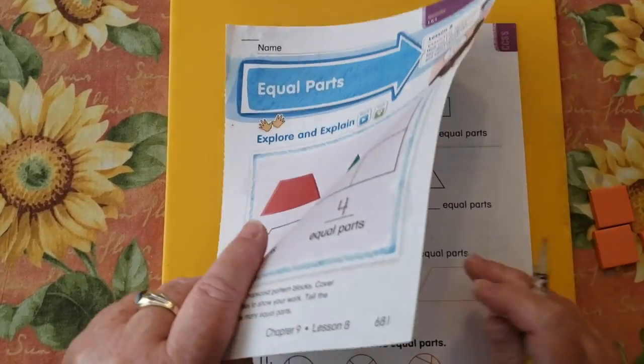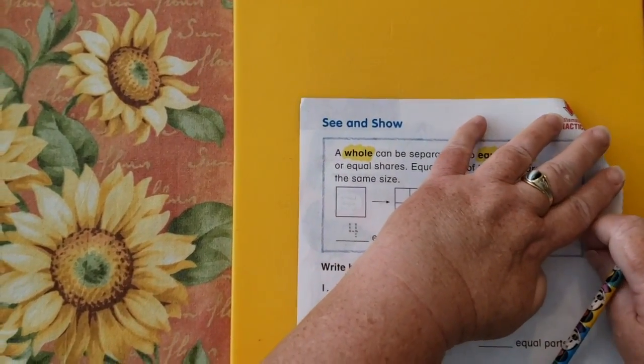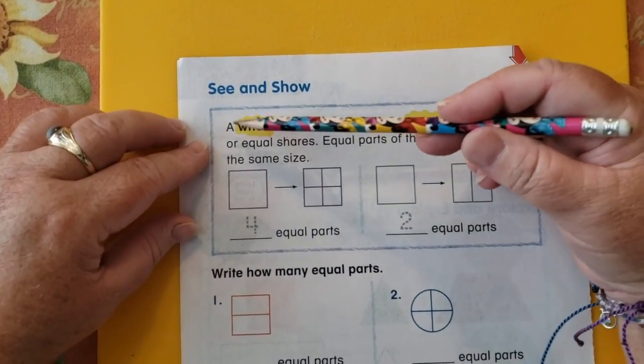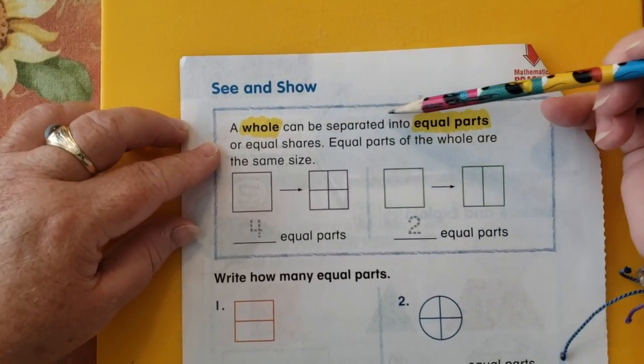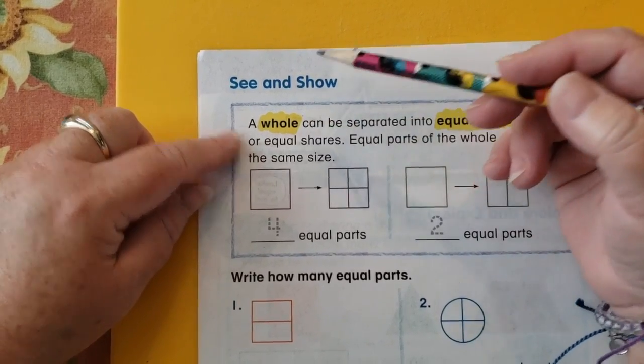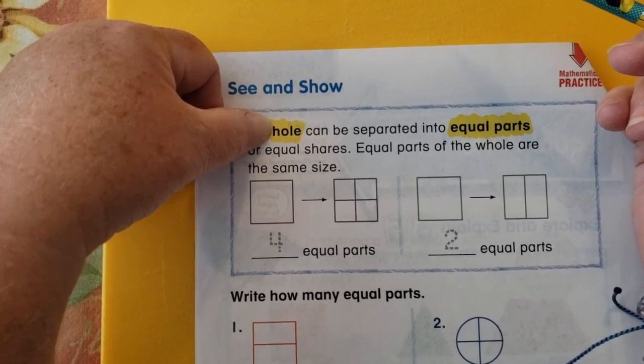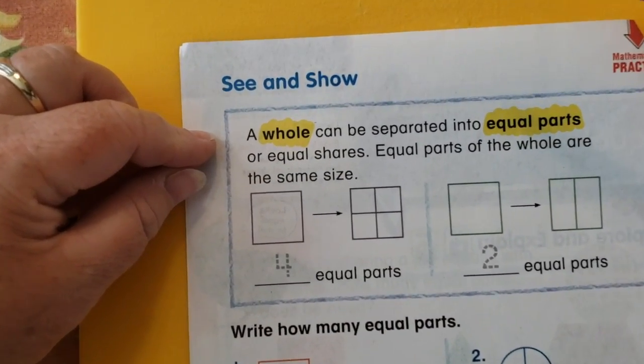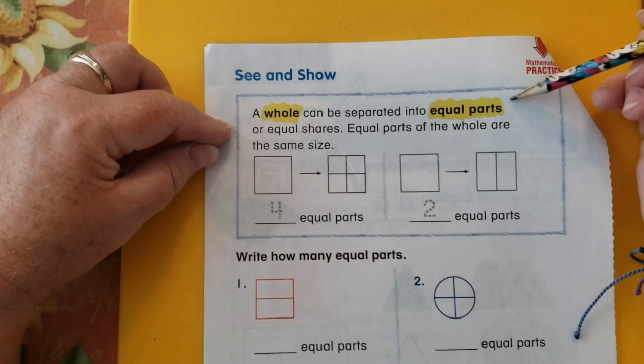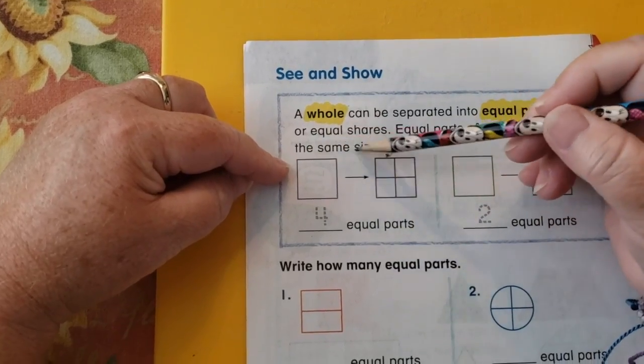Let's move to the inside. Okay, they're showing us some vocabulary words. See and show. A whole can be separated into equal parts. Not the kind of hole you fall in. If I cover the W, then it spells hole like one you can fall in. But when it has the W on there, it means like the whole thing. So you can take a whole thing and break it into equal parts or equal shares. Equal parts of the whole are the same size.